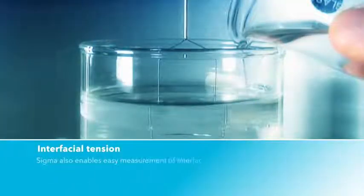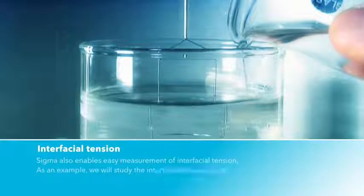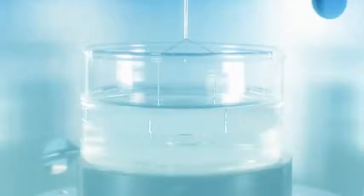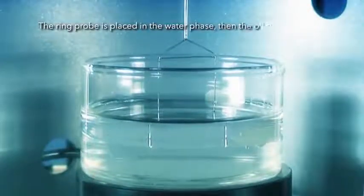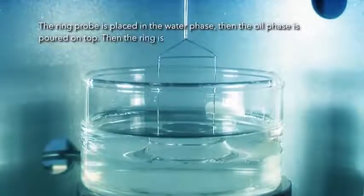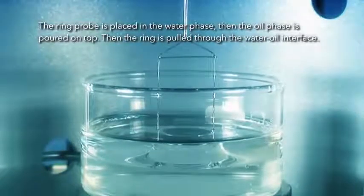Sigma also enables easy measurement of interfacial tension. As an example, we will study the interface between water and an oil. The ring probe is simply placed on the water phase, then the oil is poured on top. The ring is then pulled through the water-oil interface.